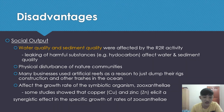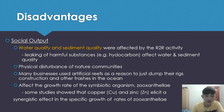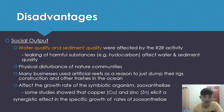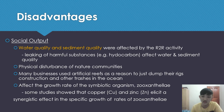Although rig-to-reef activity seems to have many advantages, some disadvantages still exist. For the social output, water quality and sediment quality are affected by rig-to-reef activity. The leaking of harmful substances like hydrocarbons affects water and sediment quality. Physical disturbance of natural communities also occurs. Many businesses use artificial reefs as a reason to dump rig construction materials and other debris in the ocean. It also affects the growth rate of symbiotic organisms, Zooxanthellae. Some studies show that copper and zinc elicit a synergistic effect on the specific growth rate of Zooxanthellae.